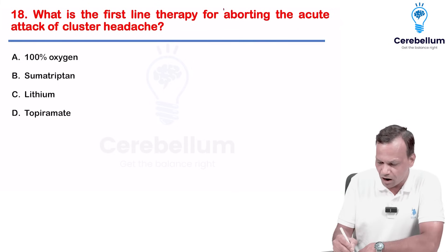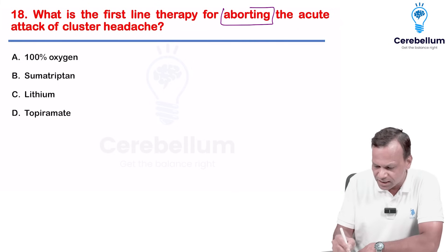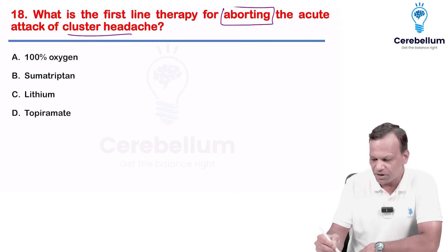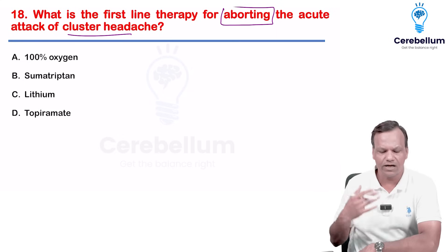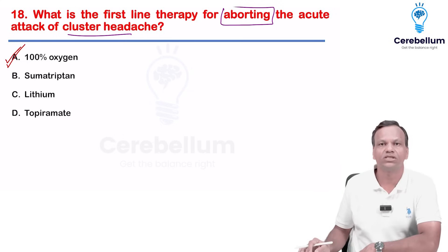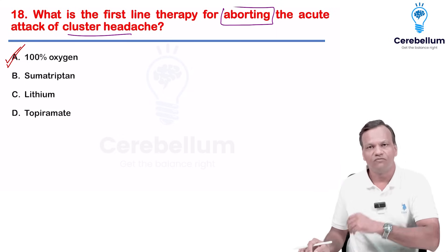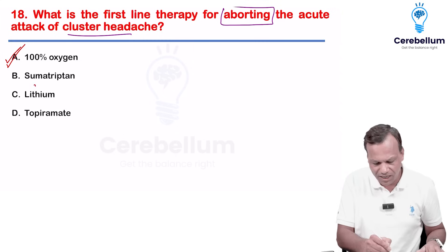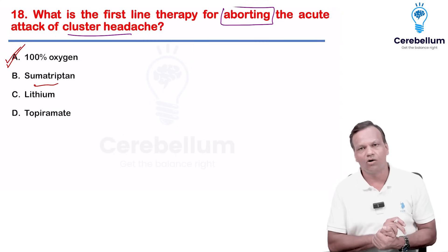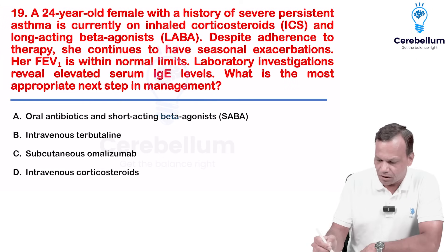Which is first-line therapy for aborting an acute attack of cluster headache? The best drug is 100% oxygen. Sumatriptan can be added, but the best drug is 100% oxygen.